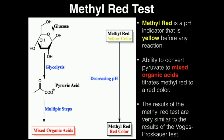As we start with glucose, the methyl red is actually going to be a yellow color. But as we go through glycolysis to form pyruvic acid and then further mixed organic acids, the mixed organic acids are actually going to titrate the methyl red with the decreasing pH to a red color. So if we're doing a methyl red test and we see a red color develop, that means the bacteria was able to convert the pyruvic acid into mixed organic acids after glycolysis.